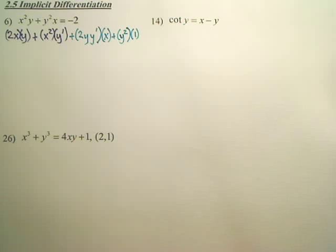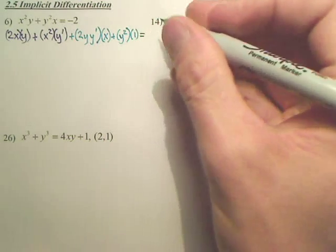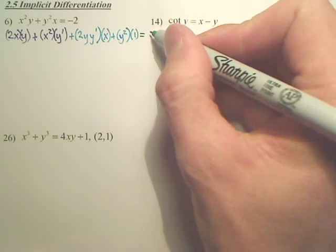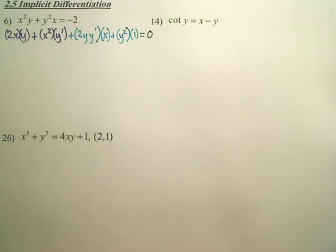And that equals, what's the derivative of negative 2? Zero. Always be happy when you see a constant when you derive. Yes, that's easy.